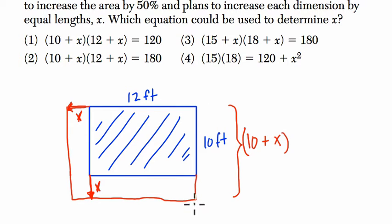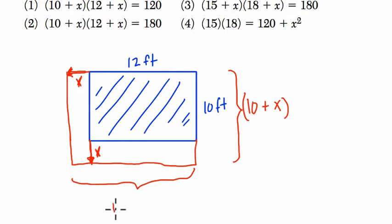And then in the other direction, what's it going to be? Let's scroll down. It's going to be 12 plus x. So this is my setup and thinking, and the way I'm thinking about it is using a picture. So these are the dimensions of the new shape: it's 10 plus x times 12 plus x.